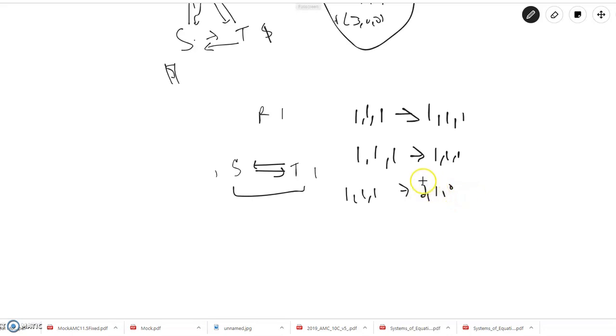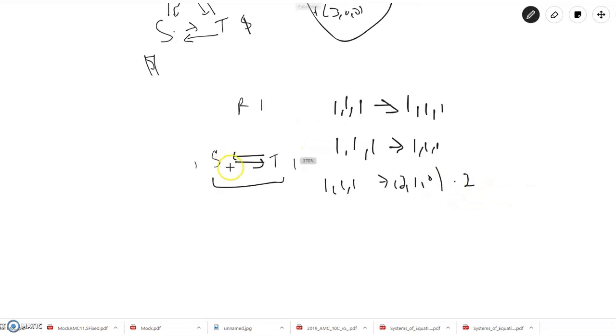And this will happen with one way, or two, yeah, one way. But since R has two choices, and we can choose, we have three choose two possible pairs for the two players that give each other their money. That's equal to six ways. So from 1, 1, 1, there's six ways where you can get to 2, 1, 0.